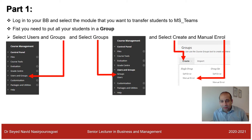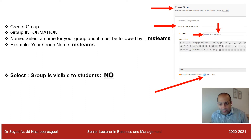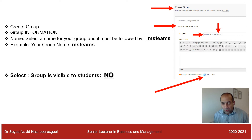Select Create and then click Manual Enrollment. On the new page titled Create Group, there is a section called Name. The most important part of this process is that when you finish your group's name, you must put underline MS Teams. For example, I put my group name as Cohort 2020 underline MS Teams.